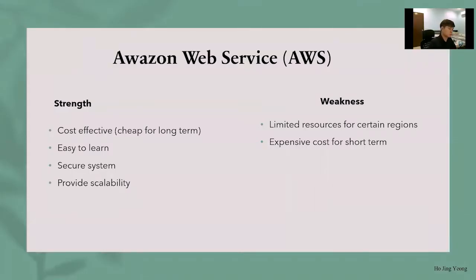My name is Juan Niu and I will be presenting a comparison of Amazon Web Services, Google Cloud, and Microsoft Azure in terms of their strengths and weaknesses. For the strengths of AWS: it is very cost effective and cheap for long term, very easy to learn as it provides very good documentation, provides a very secure system with good security, and provides very good scalability. For its weakness, it only provides limited resources for certain regions and has a very expensive cost for short term.